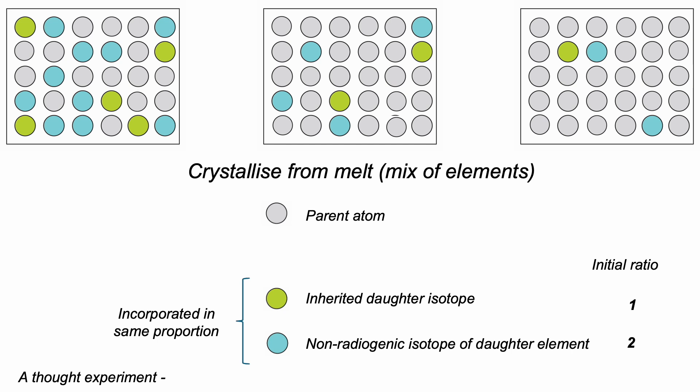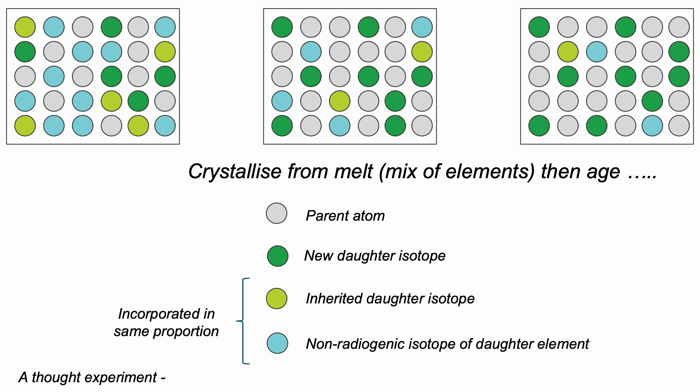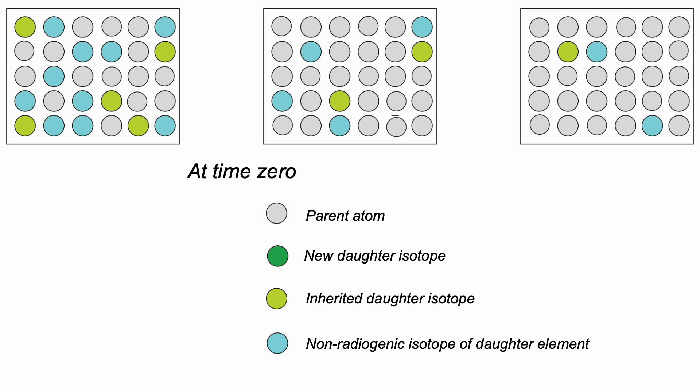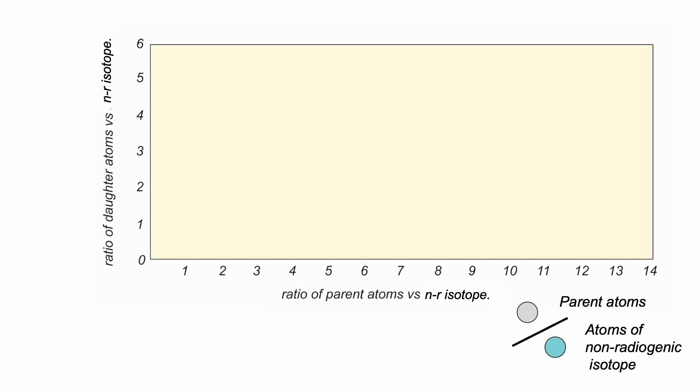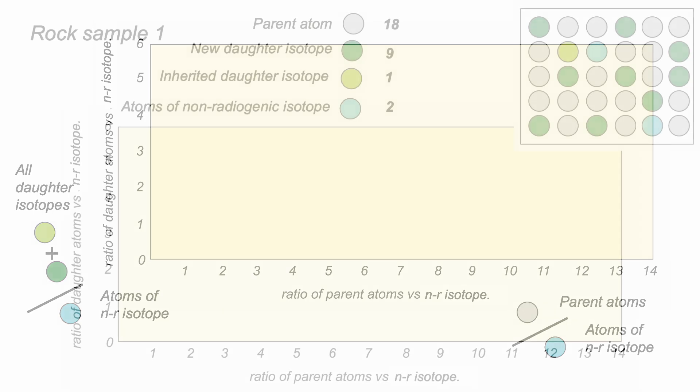So let's let our original geology get old. So daughter radiogenic isotopes added at the expense of parent atoms. So over time three samples have evolved from this to this. But as geologists we measure this, unable to discriminate between new and original daughter radiogenic isotope atoms. So let's plot this up and we'll plot ratios against the amount of the non-radiogenic isotope of the daughter element. Analyzed parents versus analyzed radiogenic daughters, new and inherited, because we can't tell them apart.